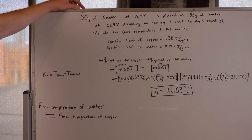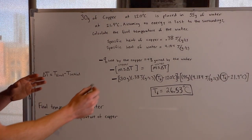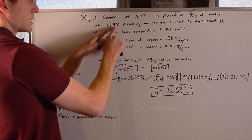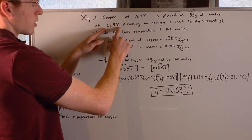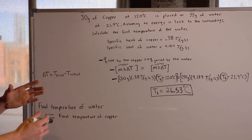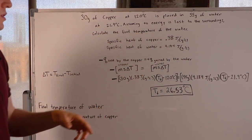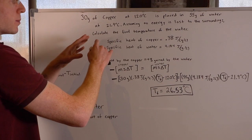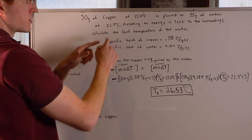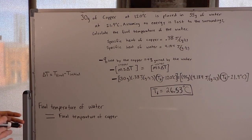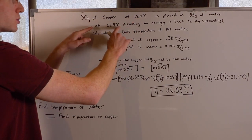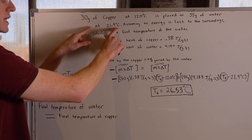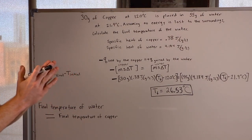Let's do another example. 30 grams of copper at 120 degrees Celsius are placed in 55 grams of water at 21.9 degrees Celsius. Clearly the copper is much hotter than the water, so it's going to warm up the water. Assuming no energy is lost to the surroundings, calculate the final temperature of the water. The key is that the final temperature of the water equals the final temperature of the copper — the hot substance transfers heat to the colder substance until they reach the same temperature.